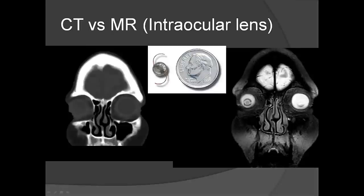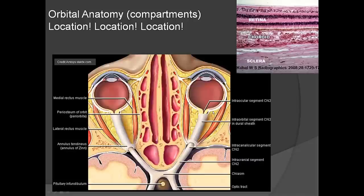Comparing CT and MRI on the same patient with a lens implant: on CT it's hard to see soft tissue but you see bone really well — the optic canal and sinuses are clear. On MRI, bone is hard to see but you can see soft tissue — the nasal mucosa, the lens implant, and brain parenchyma — much better.